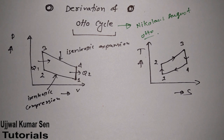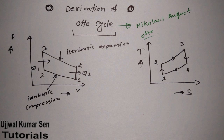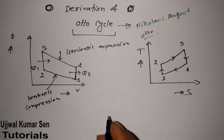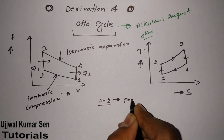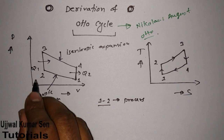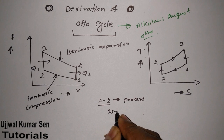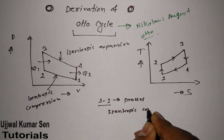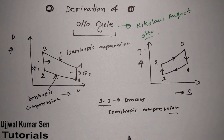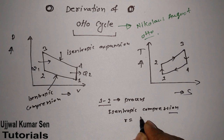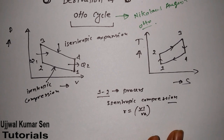These two diagrams are important. Our main goal is to find out the efficiency of this cycle. Let's preview the processes briefly. In the 1 to 2 process, isentropic compression is going on, and therefore r is equal to v1 by v2 — that is the volume ratio.